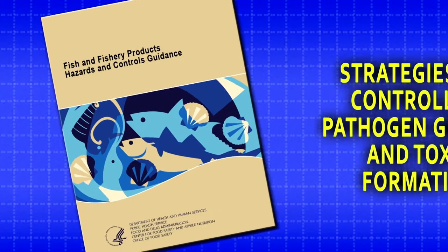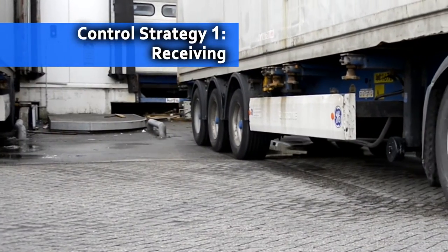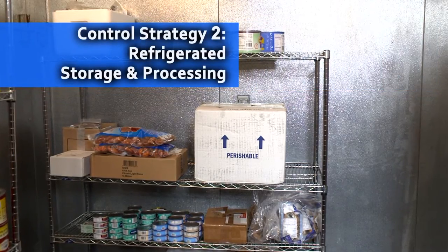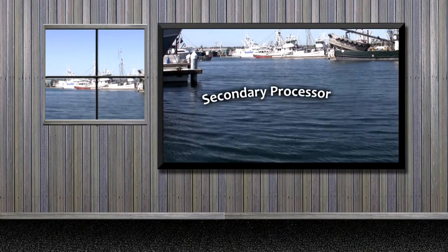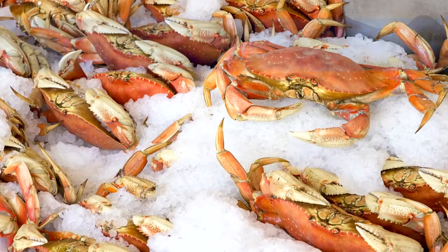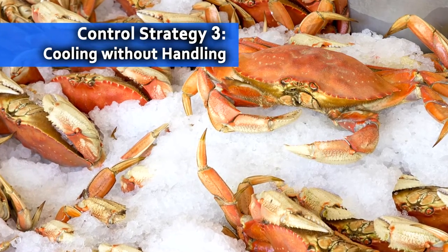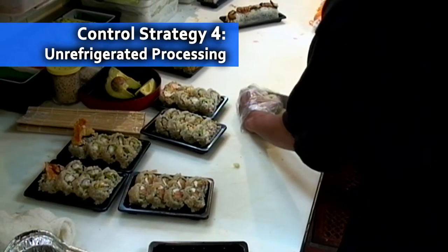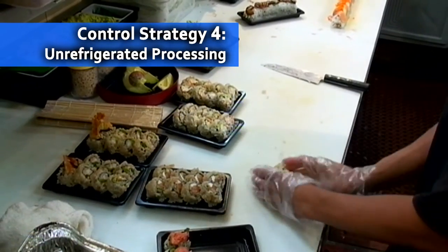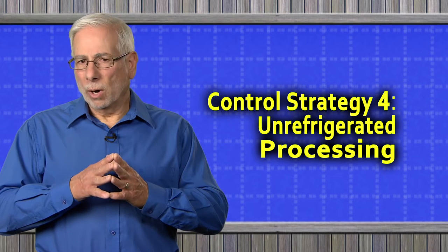In Chapter 12 of the Hazards Guide, FDA recommends four different time and temperature control strategies for controlling the hazard of pathogen growth and toxin formation. Control Strategy 1 is applied at receiving for products during transportation. Control Strategy 2 is for refrigerated storage and processing at 40 degrees Fahrenheit or below. Control Strategy 3 is for cooling after cooking where there is no significant handling and a need to control spore-forming pathogenic bacteria. Control Strategy 4 is for unrefrigerated processing that occurs at temperatures above 40 degrees Fahrenheit, with critical limits separated into raw ready-to-eat and cooked ready-to-eat.